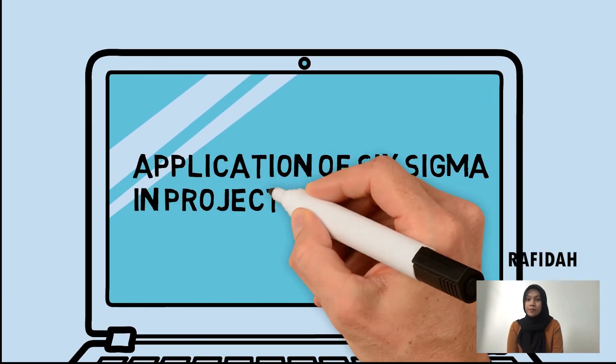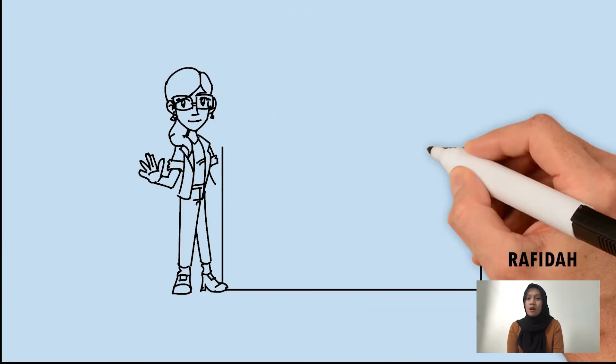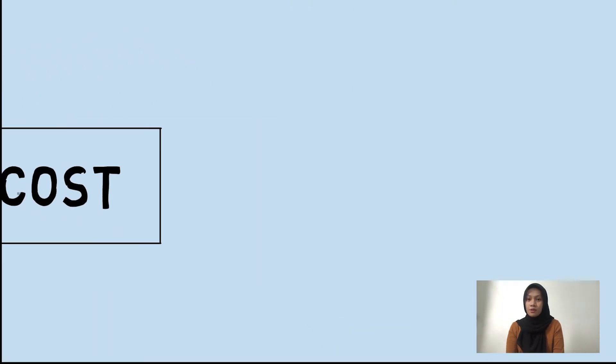There are four types of applications of Six Sigma in project management: Cost, Quality, Scope, and Time.